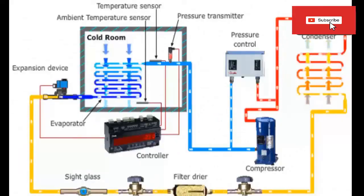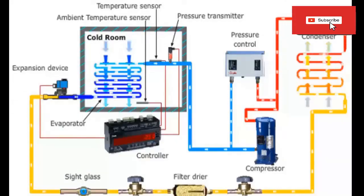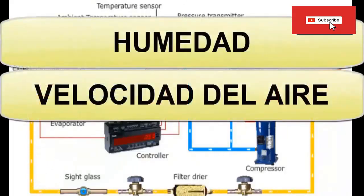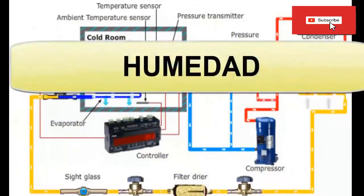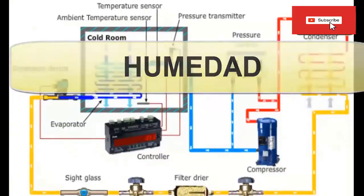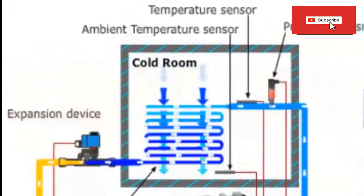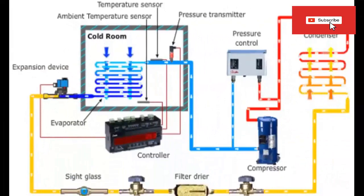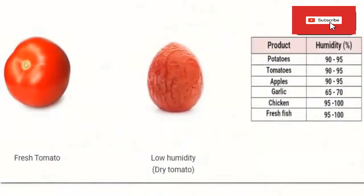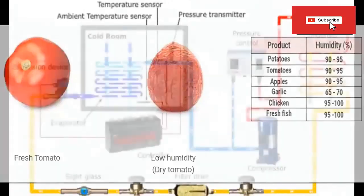Now let's talk about the variables to control in a cold room: humidity, air speed, and temperature. Regarding humidity control: A. The cold room controls humidity to avoid dehydration of the stored product. B. The growth of microorganisms is also influenced by the humidity of the surrounding air. C. The water content in the food product helps microorganisms to grow.